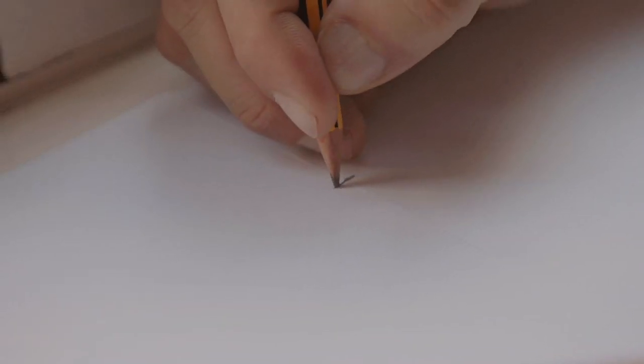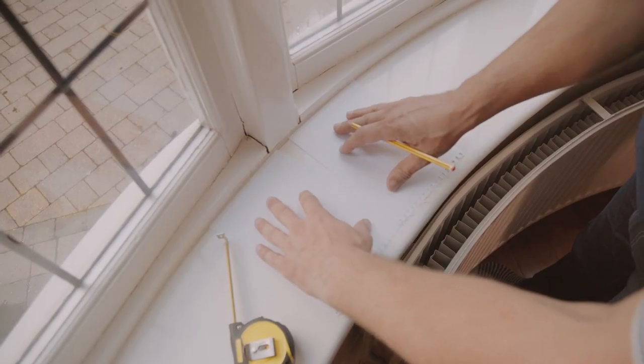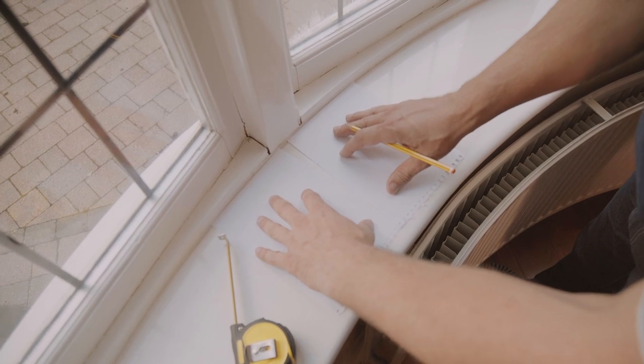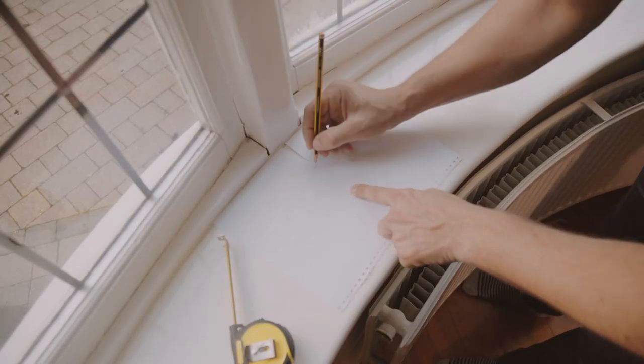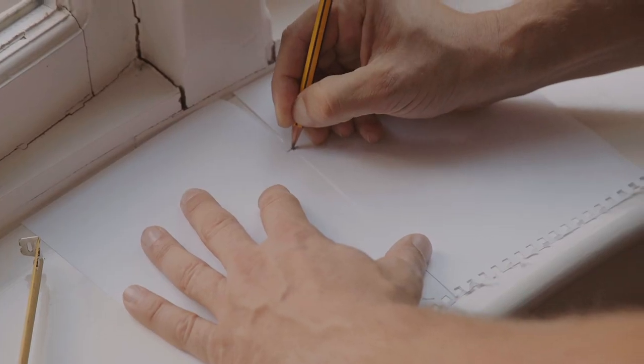Now we're going to slide the two pieces of paper towards each other along the windowsill until the two marks we made meet up. Now use the pencil, make a small mark on the sill where the paper meets the window frame.